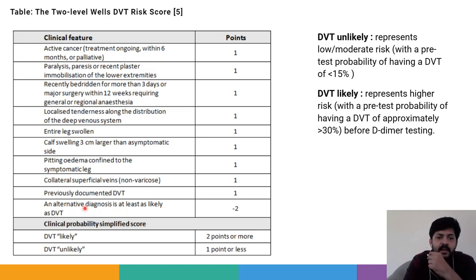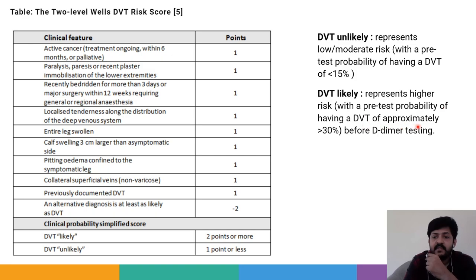To calculate the two-level Wells DVT score: DVT is likely if the score is two points or more, and DVT is unlikely if the score is one point or less. A score of two or more represents higher risk with a pre-test probability of approximately more than 30% of having a DVT before testing. DVT unlikely represents low or moderate risk with a pre-test probability of less than 15%.